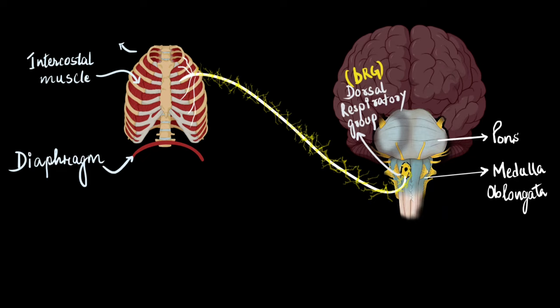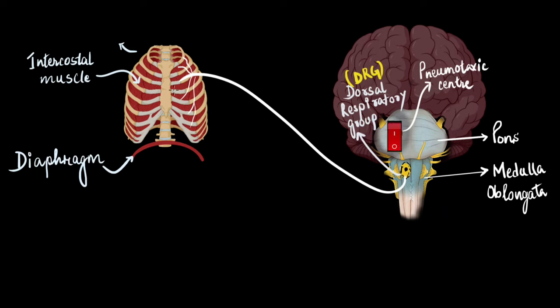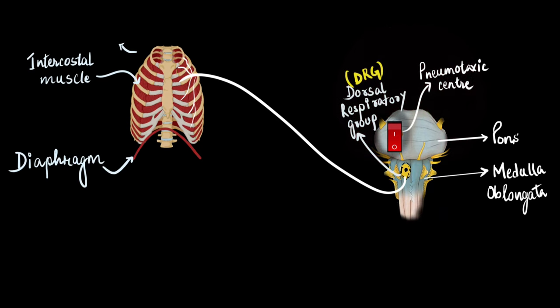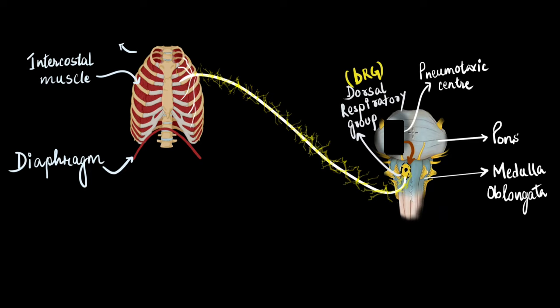The switch for these signals is a special center in the pons called the pneumotaxic center. It is a group of neurons with the power to only switch off the DRG. Because the DRG is always switched on by itself, the pneumotaxic center can only switch it off — and that too for no more than three to five seconds. When there is no signal from the brain, the intercostal muscles relax and that leads to exhalation. The pneumotaxic center switches off the DRG at least 12 to 16 times per minute, and that is how exhalation takes place.